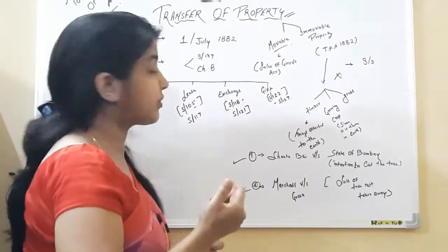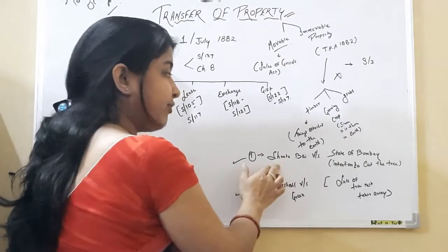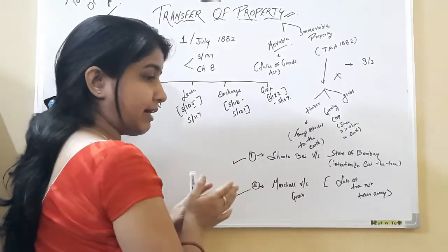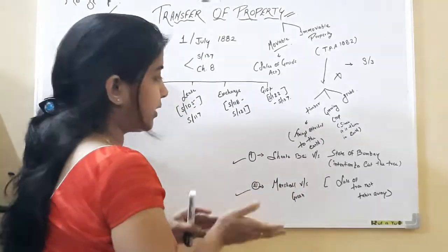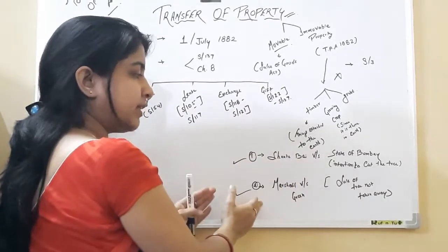If your intention is to cut that tree from the ground, then it will become a movable property. If your intention is not to cut that grass or that timber from the ground, then that property is known as immovable property.